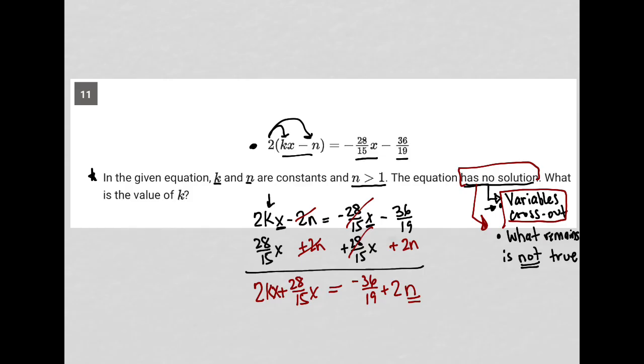Well in order for 2kx plus 28/15 x to cross out, 2k has to equal negative 28/15. Now that should make sense because if 2k equaled negative 28/15 what we would have down here is a negative 28/15 x plus 28/15 x and they would cancel each other out.